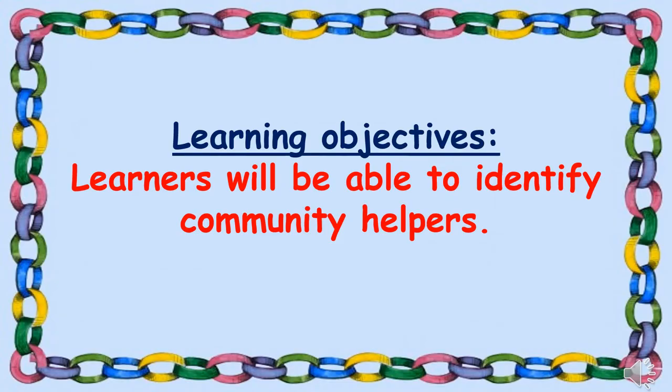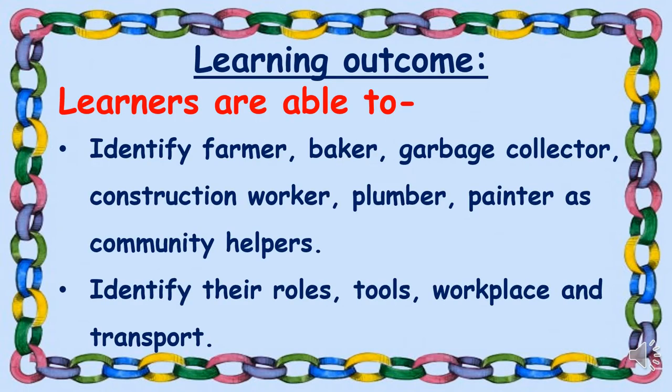Learning Objectives: Learners will be able to identify community helpers. Learning Outcome: Learners are able to identify farmer, baker, garbage collector, construction worker, plumber, and painter as community helpers, and identify their roles, tools, workplace, and transport.